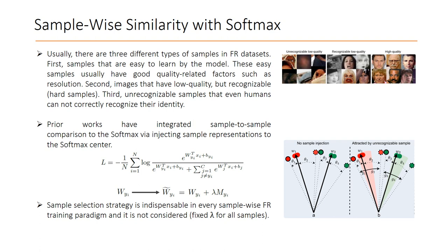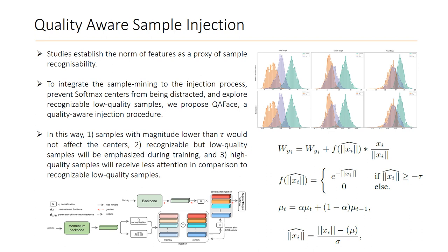Prior works have integrated sample-to-sample comparison into angular softmax by injecting instance representations into the softmax centers. However, the sampling strategy, which is an indispensable part of every sample-wise face recognition paradigm, needs to be considered in them. Studies have shown that the norm of features represents the sample quality. The QA phase takes advantage of this property to integrate sample mining into the injection process.